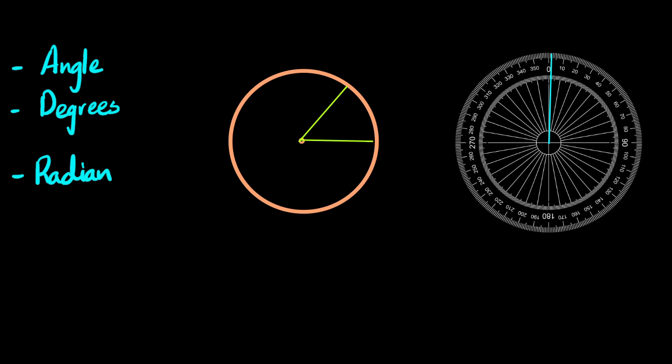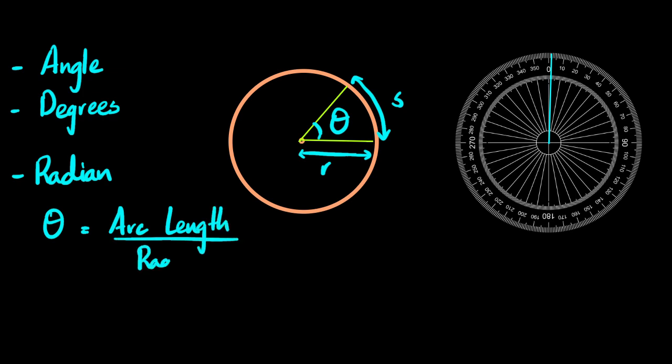The way that a circle is defined is in terms of its radius. That's the only thing you need to actually define a circle. So this is the radius, and if you're talking about this sector, I can also say that this is the arc length of this sector. The way that this radian, this angle, is defined is the ratio of the arc length to the radius.